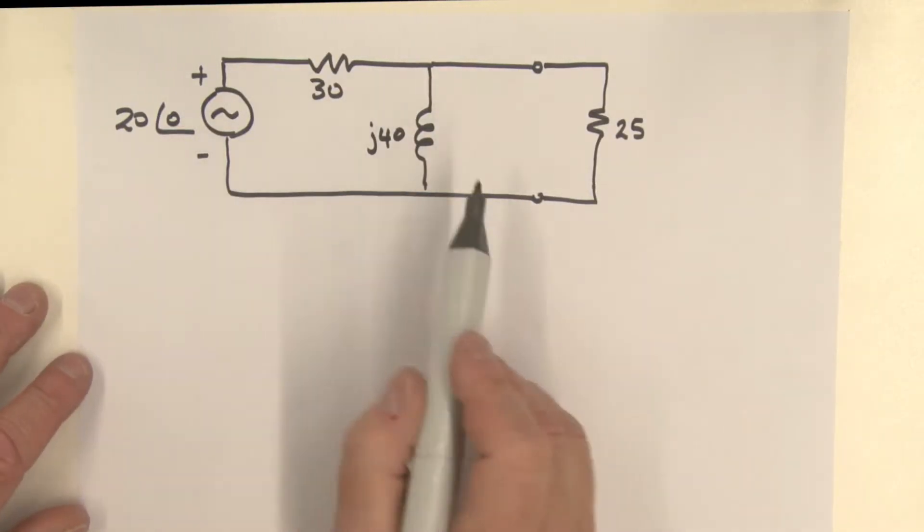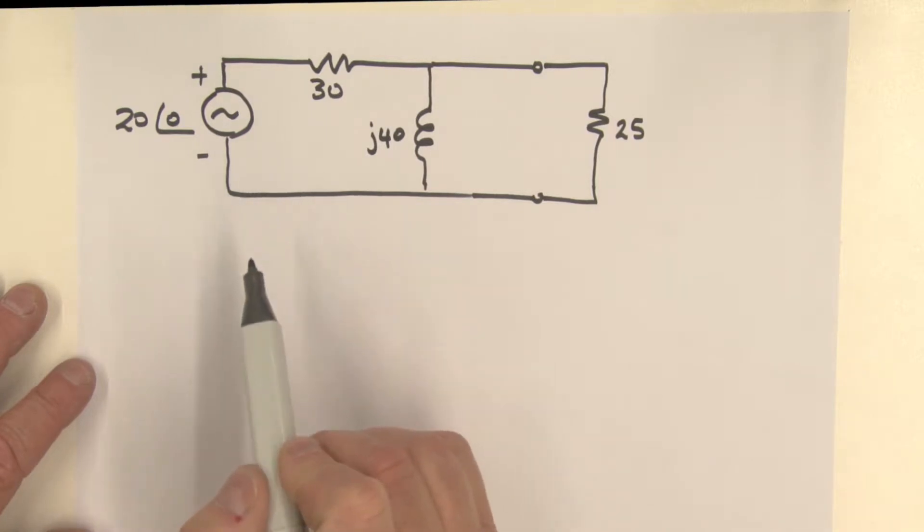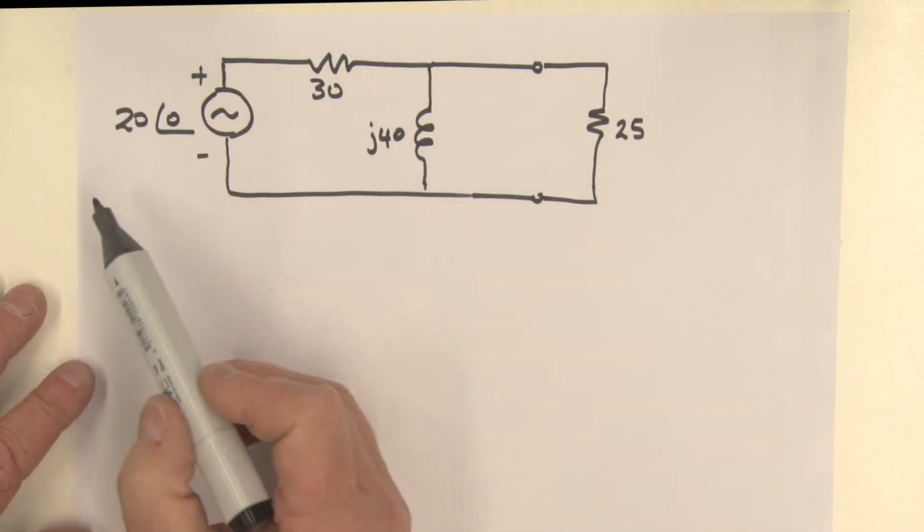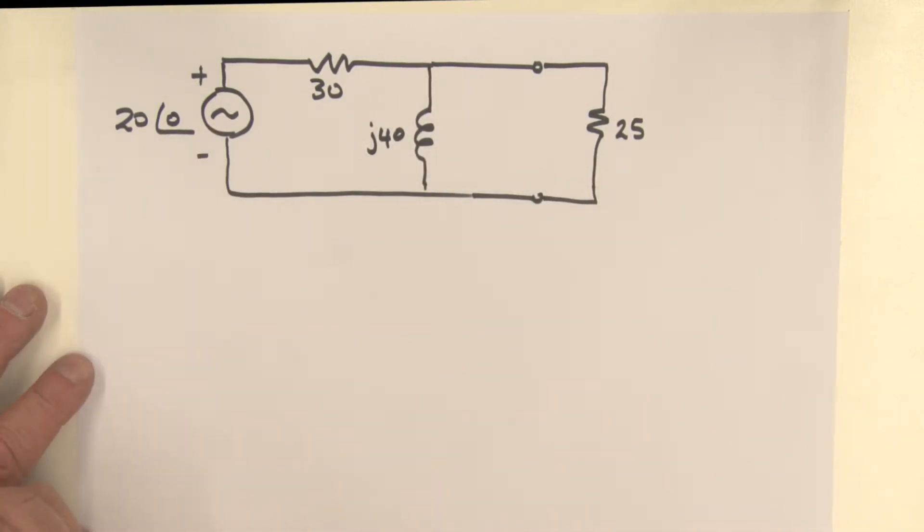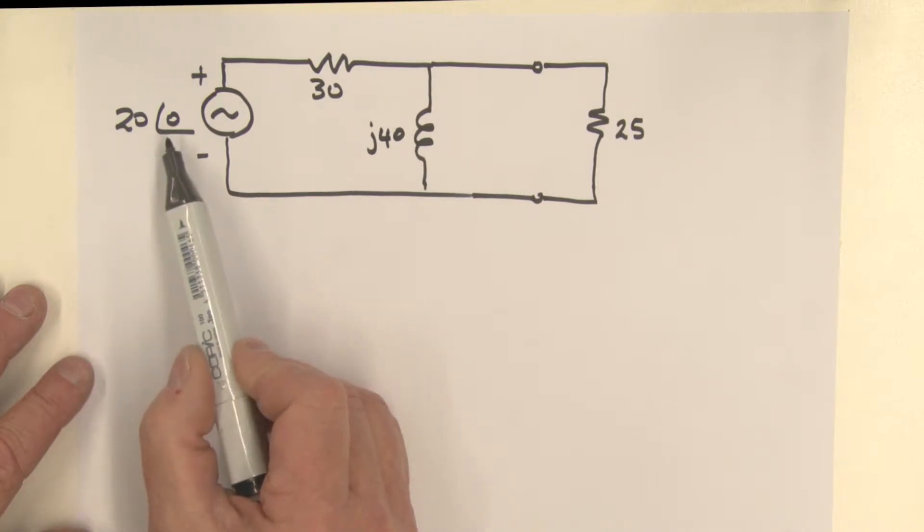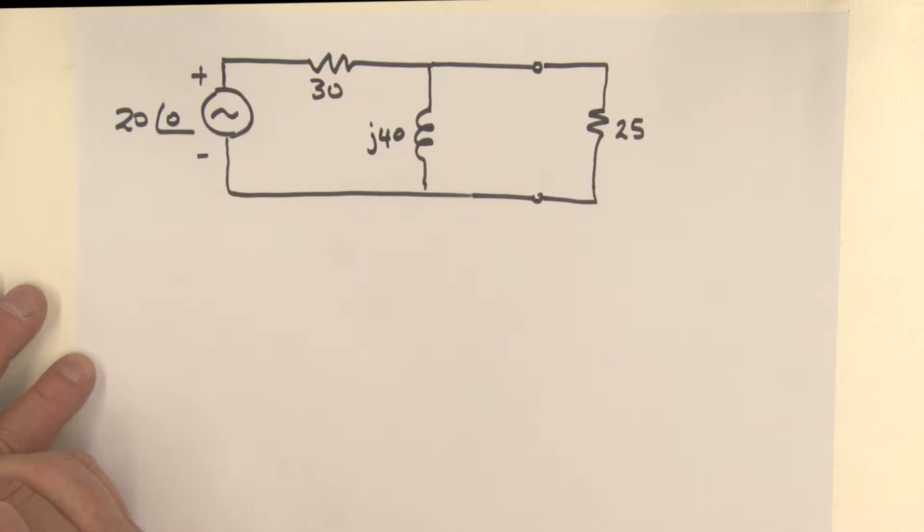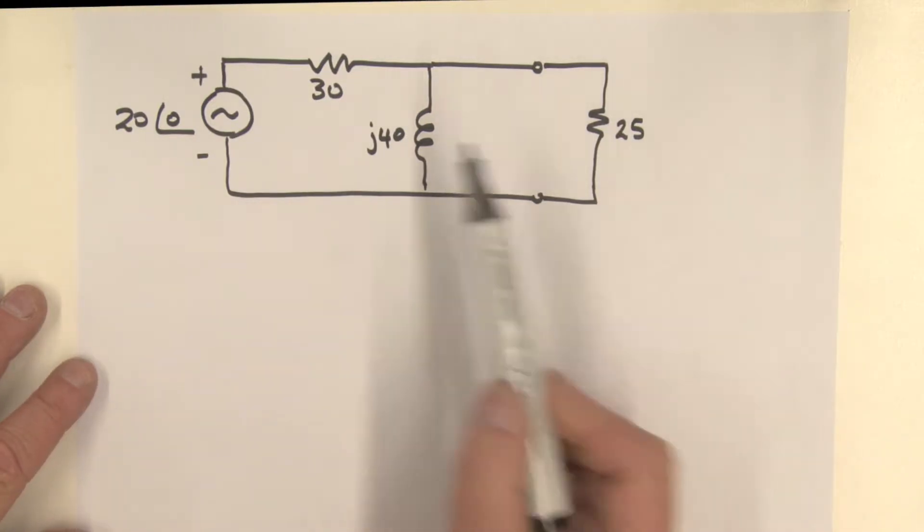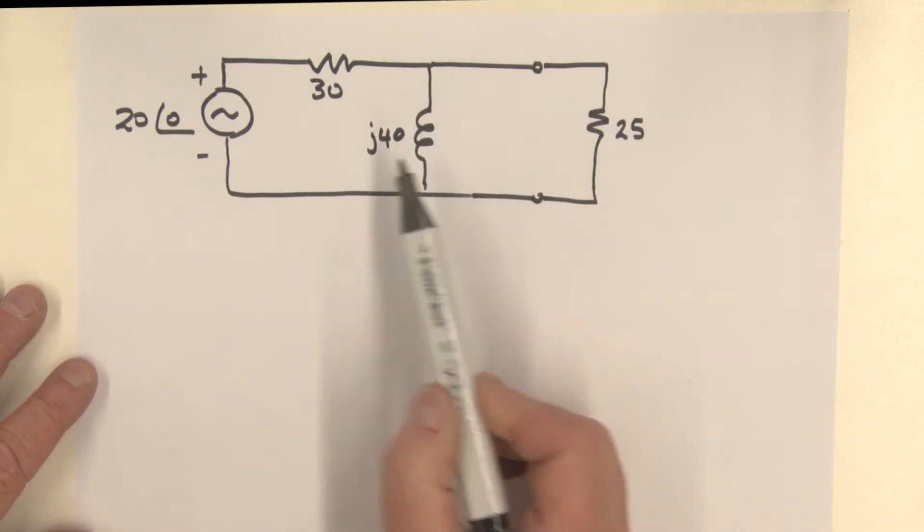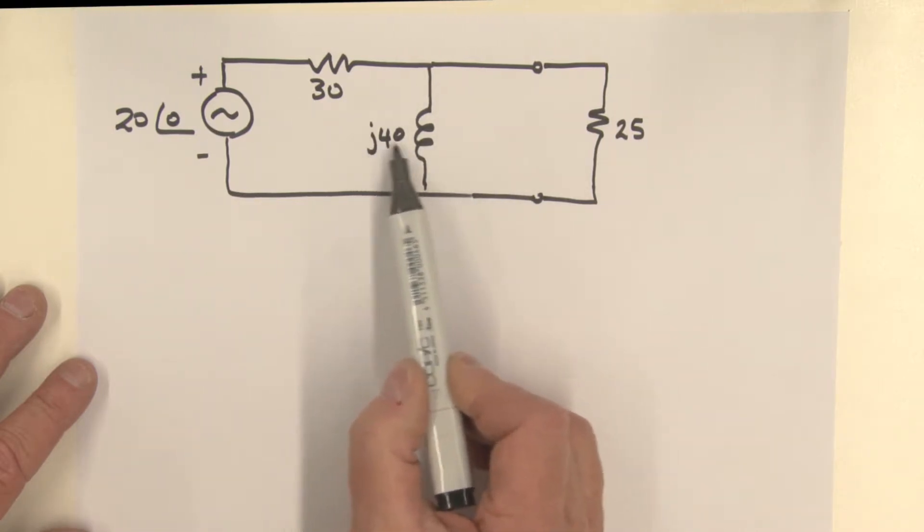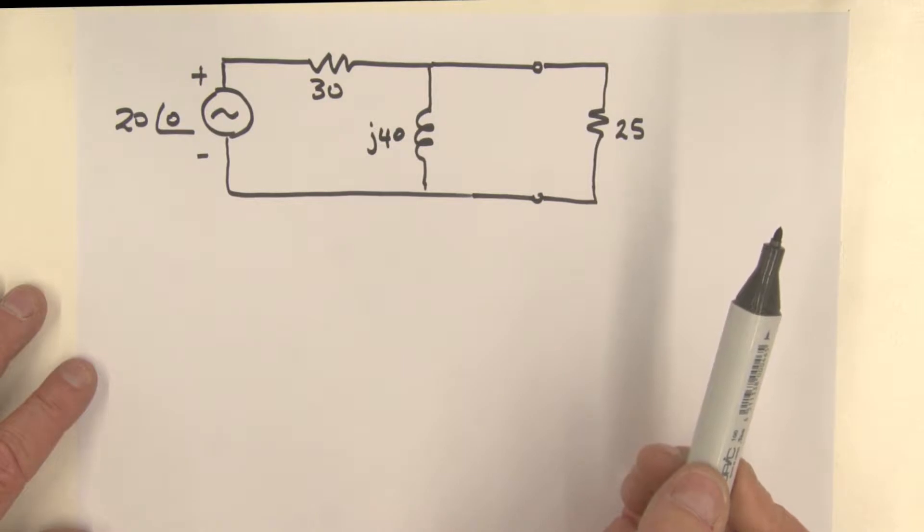Things get a little bit more difficult when we consider AC circuits with complex impedances. Let's look at this case over here. We have a 20 volt sinusoidal voltage source. Let's say that's an RMS value, we'll work in RMS. We have an inductor sitting over here, and at the particular frequency of operation, it has an impedance of J40.